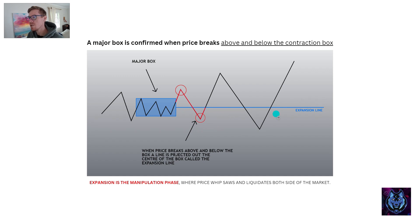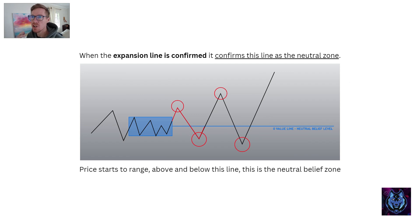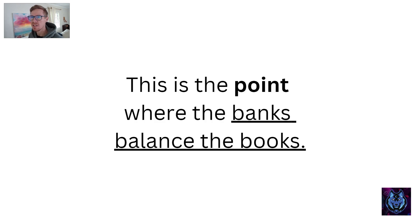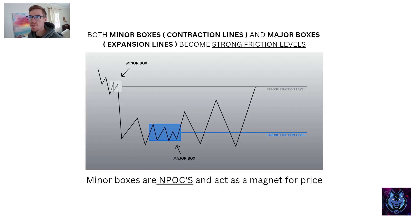Now that we have this expansion line — our neutral point — price likes to gravitate above and below this line. When the expansion line is confirmed, it becomes the neutral belief zone. This is the point where market makers and big players balance their books, driving price up and down constantly around this line — making money on the way down and up. Both the minor boxes (contraction lines) and major boxes (expansion lines) become very strong friction levels, even stronger than regular support and resistance lines.